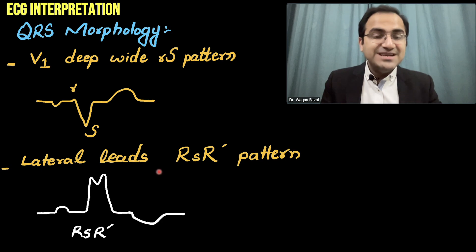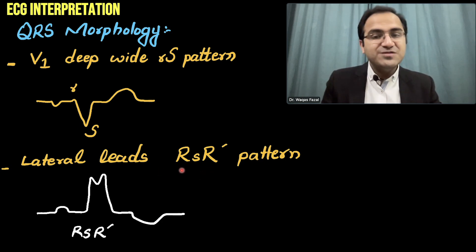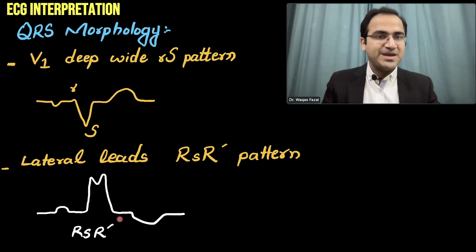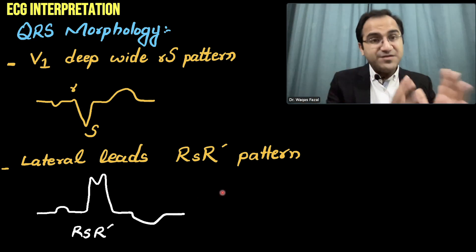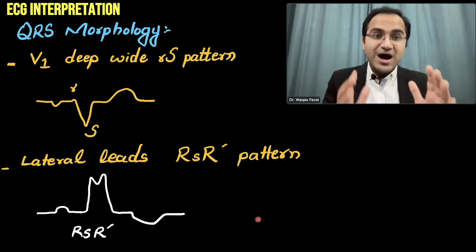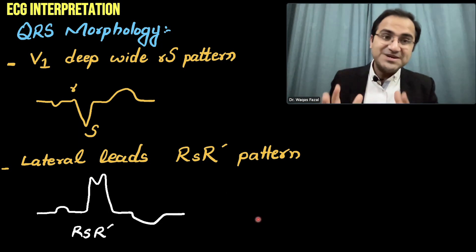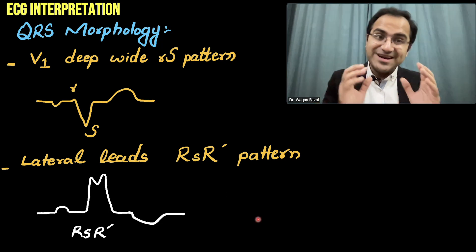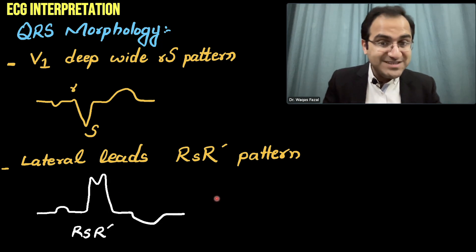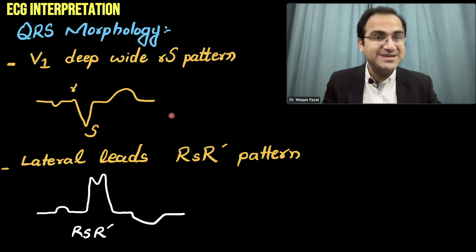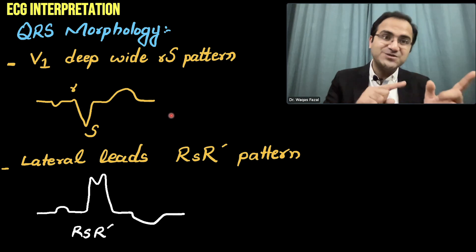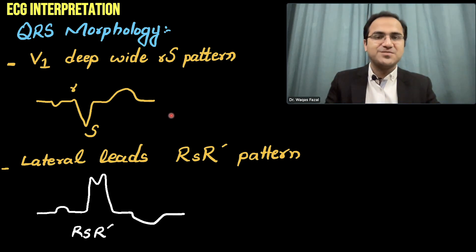In the lateral leads V5 and V6, you will see the M wave. This is the classical presentation of left bundle branch block. Comparing with right bundle branch block: in right bundle branch block the M wave is seen in V1 and the S wave is seen in V6 — the opposite of left bundle branch block.